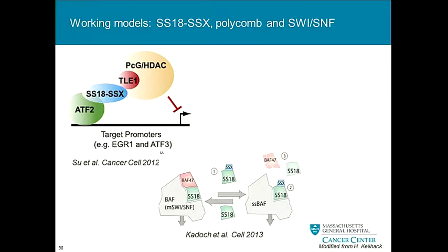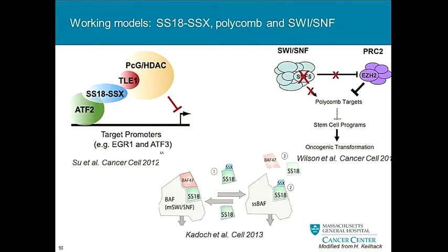Separately, Cigall Kadoch — during her postdoc at Stanford, now at Dana-Farber — figured out that SS18, the fusion partner in SS18-SSX, is actually a normal part of mammalian SWI/SNF, also called BAF. SNF5 is also known as BAF47. She worked out that the fusion protein can actually kick out wild-type SS18 and SNF5, leading to their degradation and altering SWI/SNF activity. Coming back to the antagonism model: if we lose SNF5 through this mechanism, we lose the negative regulation of EZH2, allowing overactivity and altered transcription.